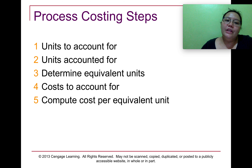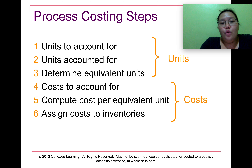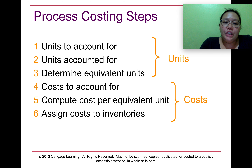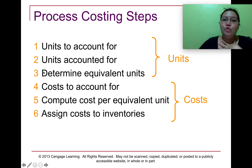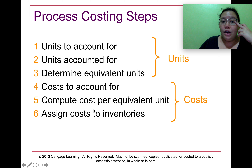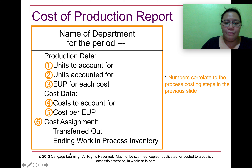When solving process costing problems, there are six steps. Step 1: compute the units to account for. Step 2: compute the units accounted for. Step 3: determine the equivalent units of production. Step 4: compute the cost to account for. Step 5: compute the cost per equivalent unit. Step 6: assign cost to inventories. The first three steps deal with units, and steps four through six deal with assigning costs. This produces what is called the cost of production report.